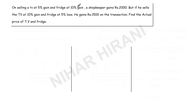Hello, let us solve this question — this is a very easy question. On selling a TV at 5% gain and a freezer at 10% gain, a shopkeeper gains Rs. 2000. But if he sells the TV at 10% gain and the fridge at 5% loss, he still gains Rs. 1500 on the transaction. Find the actual price of the TV and the fridge.